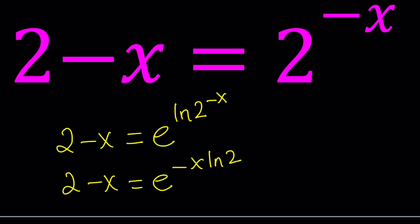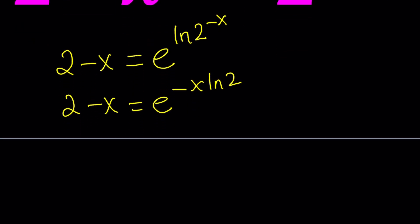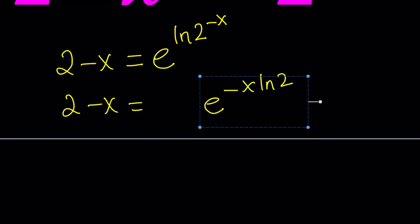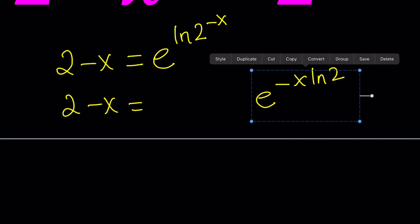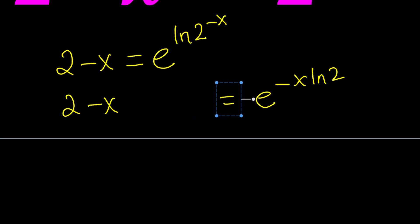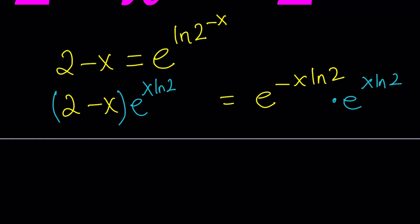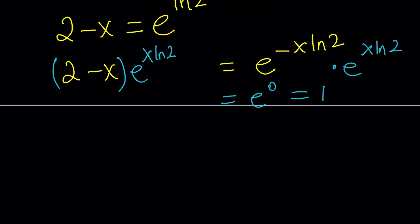We're going to multiply both sides by something to get rid of the negative exponent — the opposite exponent. We're going to multiply both sides by e to the power x ln 2, and here the same thing, e to the power x ln 2. Now what happens on the right-hand side? You add the exponents, and you get 0. That's what I wanted, because I wanted to get 1. e to the power 0 equals 1. So that gives me 1. So we're going to write it as 2 minus x times e to the power x ln 2 equals 1.